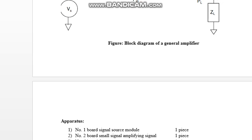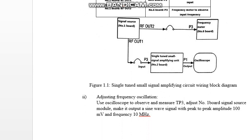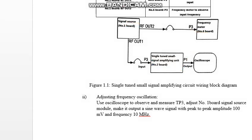You have to keep in mind that you have to first of all draw the circuit of the single tuned small signal amplifier unit. This block — the single tuned small signal amplifying unit — we should draw and extract the output. There is a signal source and a frequency meter to analyze the frequency output.